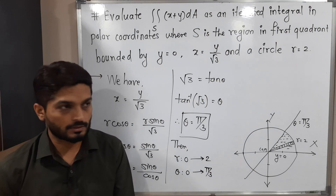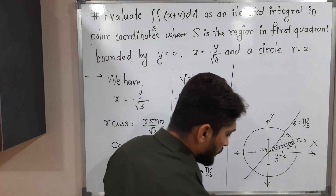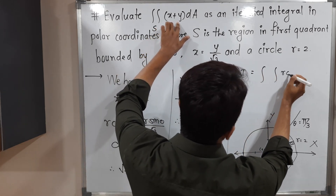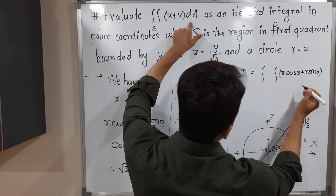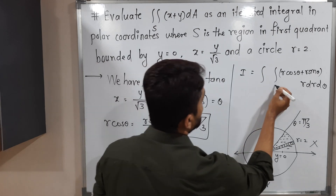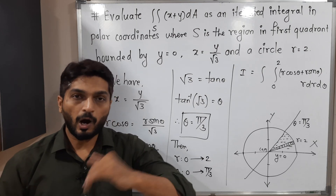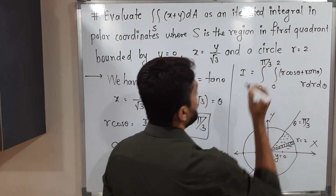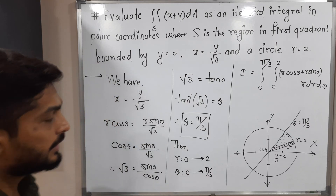Now the problem is very easy. We write I equals the double integral of (x + y) dA. Here x equals r cos θ and y equals r sin θ, and dA equals r dr dθ. The inner integration is with respect to r from 0 to 2, and the outer integration is with respect to θ from 0 to π/3. So the integral in polar form is the integration from 0 to π/3, of the integration from 0 to 2, of r(cos θ + sin θ) · r dr dθ.